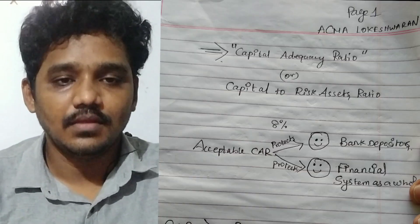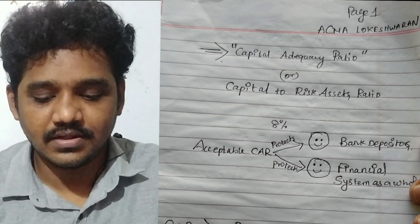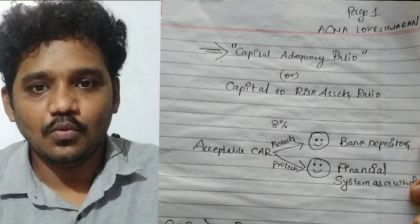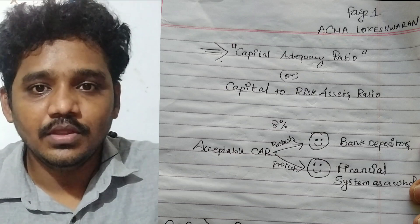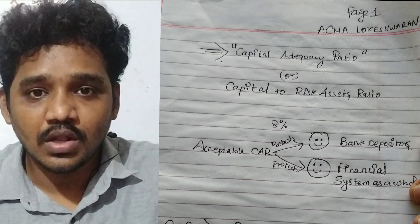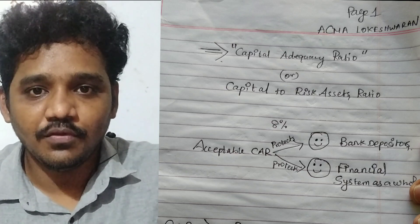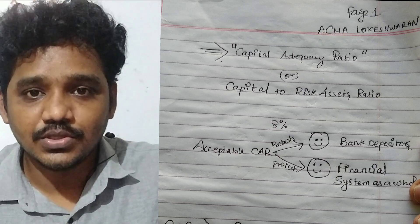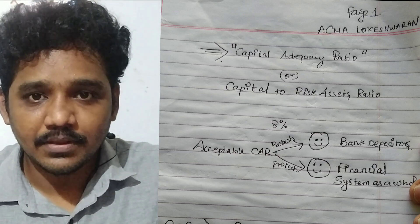Hi everyone, this is Lokeshwaran. Hope you all are doing good. Today's topic is Capital Adequacy Ratio, also called Capital to Risk Assets Ratio. If you want to understand the financial performance of a particular bank, this ratio will be very useful. This is one of the key performance measures for banks. So let's discuss about Capital Adequacy Ratio.